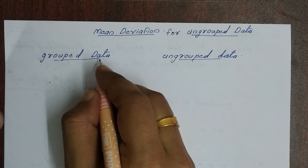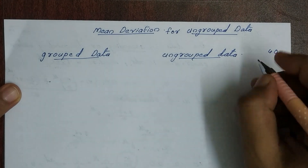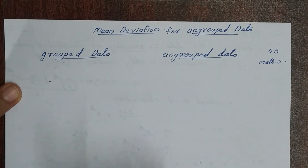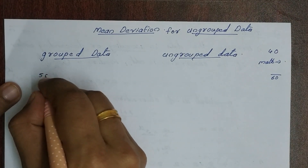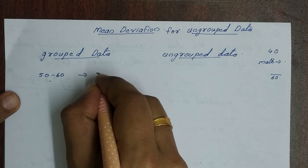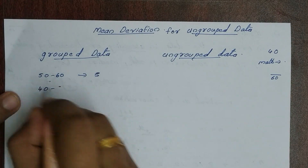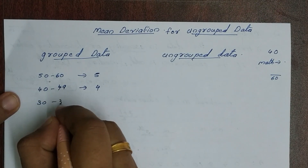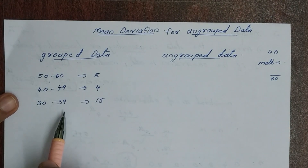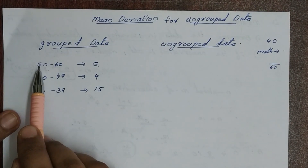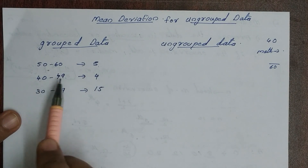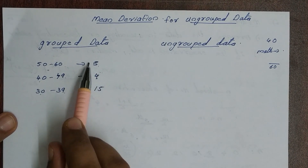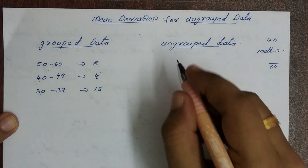For grouped data: suppose you have 40 students in class in the Second Terminal Exam, out of 60 marks. We select intervals: 50 to 60 marks with frequency 5, then 40 to 49 marks with frequency 4, then 32 to 39. So we have grouped data — marks grouped into intervals. For ungrouped data, we list all 40 individual student marks separately — each mark is recorded individually. This is ungrouped data.